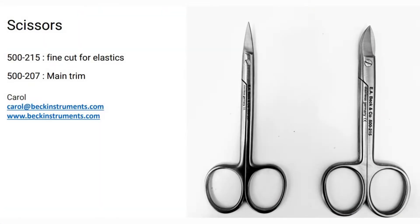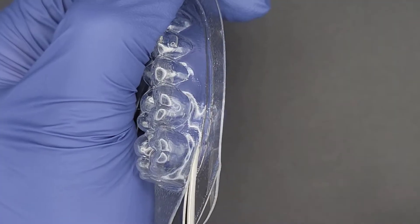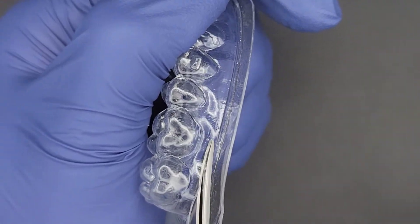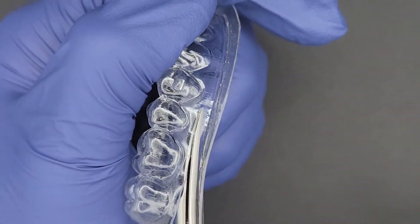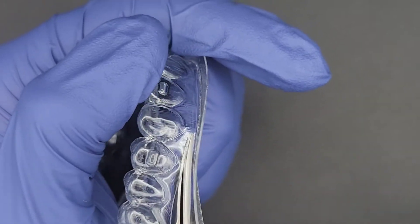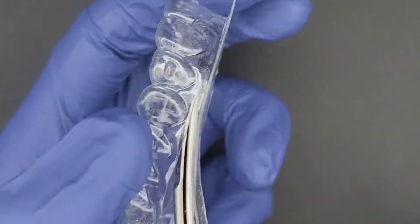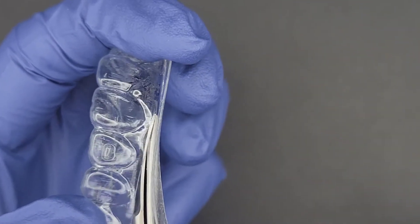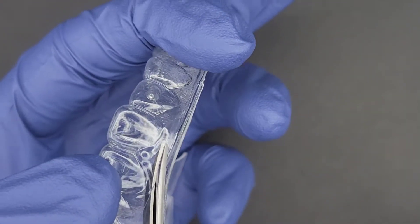We will be using these scissors for our trimming. Begin by cutting near the gum line starting at the back molar. Follow the gum line to make a smooth continuous cut all the way around the arch.